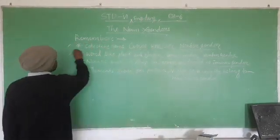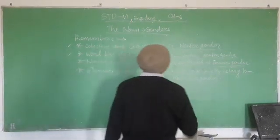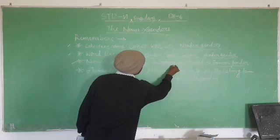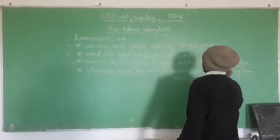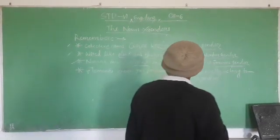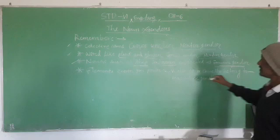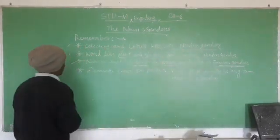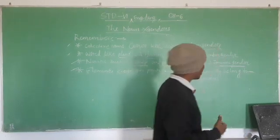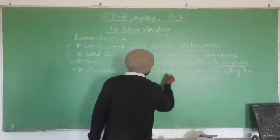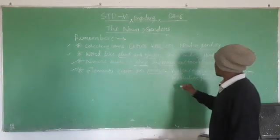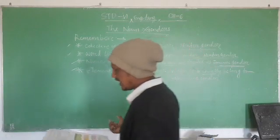Point number two: things like plant and flower come under neuter gender. Point number three: nouns such as sheep and river are treated as feminine gender. Sheep and river are non-living beings, but they are treated as feminine gender — they are not referred to as neuter gender. Point number four: elements known for power, violence, and cruelty belong to the masculine gender. These are not neuter gender — power, violence, cruelty are masculine gender.